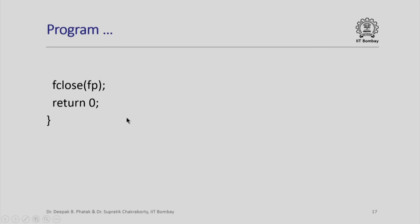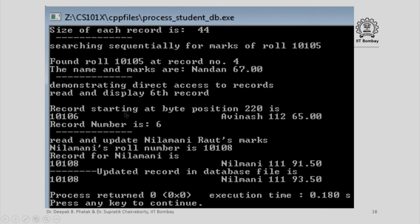Let us look at the execution results just to understand how the program has progressed. It prints size of each record is 44. Then it is searching sequentially for marks of roll number 10105. Through the iteration that we have set up, it found roll number 10105 at record number 4 and the name and marks are Nandan 67.00.